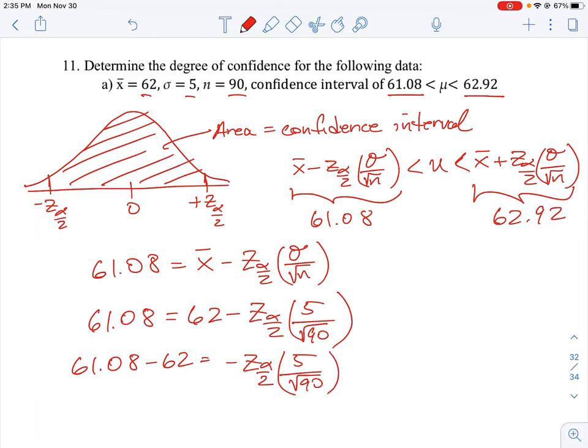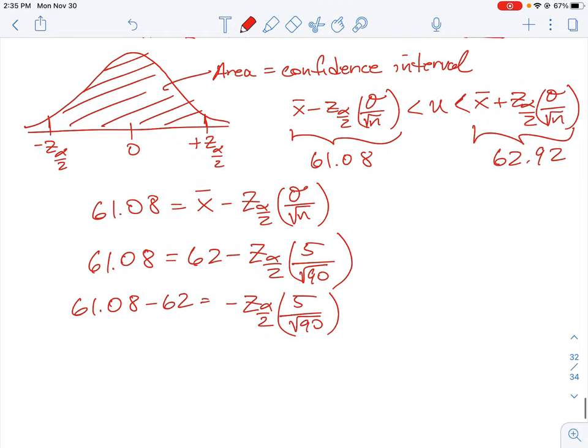Then what we can do is we need to essentially multiply by root 90 over 5 on both sides to cancel out the 5 over 90 term and then divide by negative 1. So then our expression can be, we're going to take root 90.